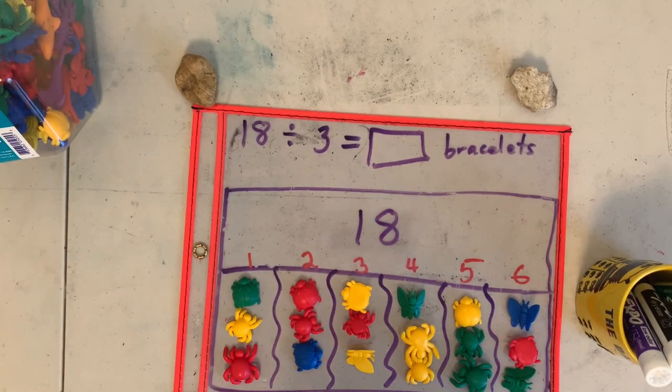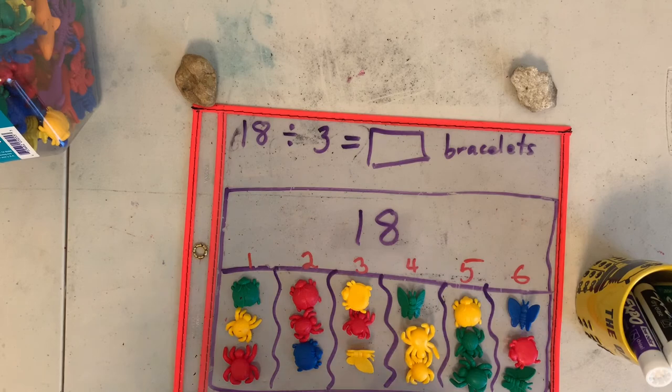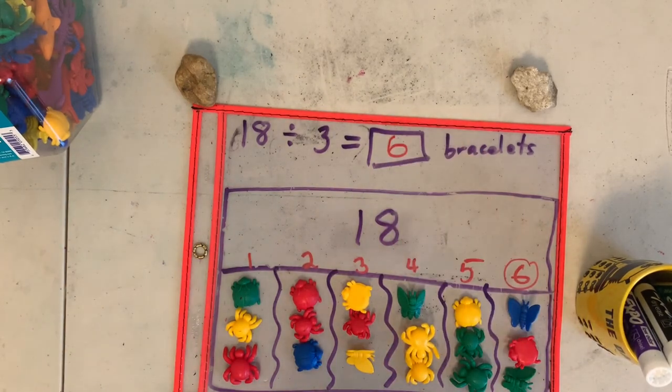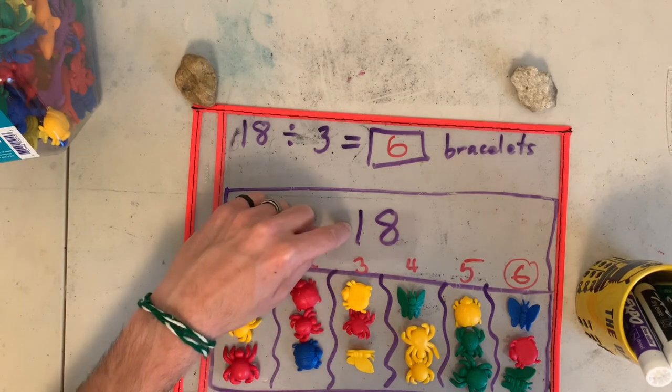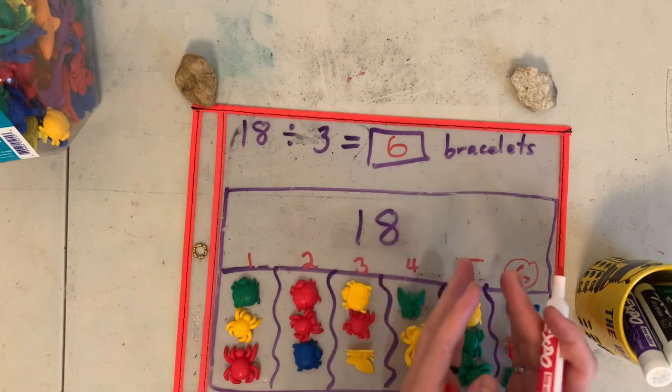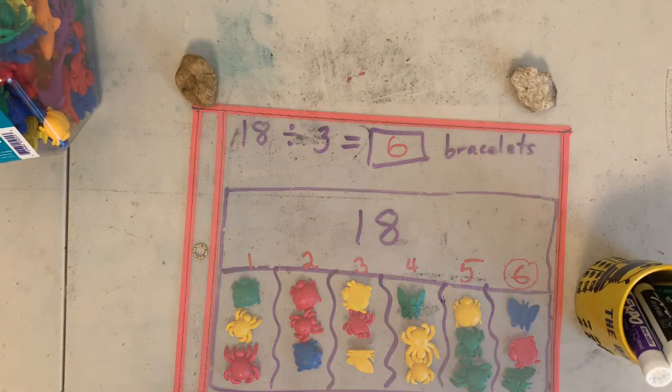So how many bracelets with three beads did Laura have? Or did she make? She made six bracelets. And with 18 beads, with three beads per bracelet, she has six bracelets. Very good.